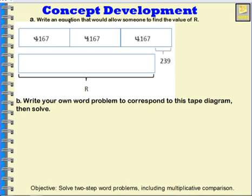To answer the question, how many marbles does Presley have, we can see that Presley has 589 marbles. Now let's try this one: write an equation that would allow someone to find the value of r. Well, r is this rectangle right here, so r plus 239 would be the same as all of this, which is 3 times 4,167. So we could say that r plus 239 is equal to 3 times 4,167. We also might phrase it this way: 4,167 times 3 is equal to r plus 239.